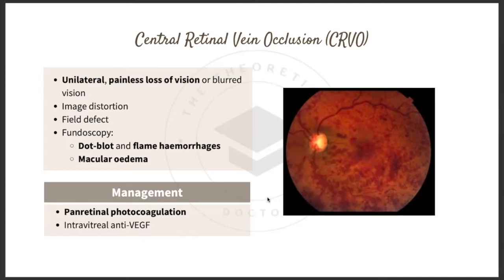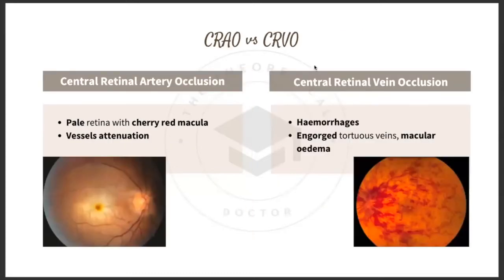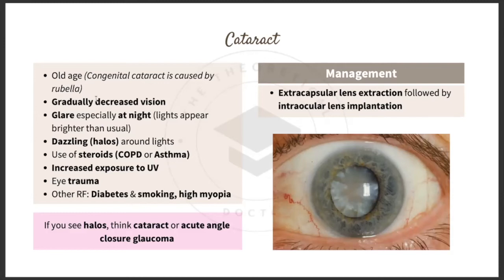To differentiate CRVO from CRAO: in CRVO the background is red with flame hemorrhages and engored tortuous veins; in CRAO the background is pale/white with a cherry red macula spot and vessel attenuation. Management of CRVO is pan-retinal photocoagulation or intravitreal anti-VEGF, with pan-retinal photocoagulation being preferred.